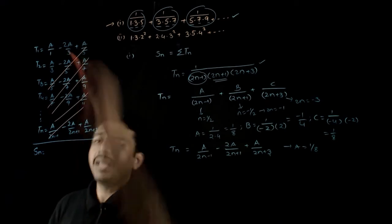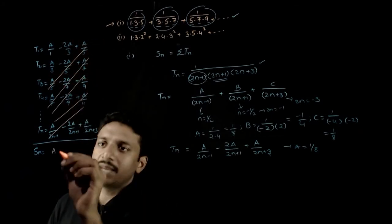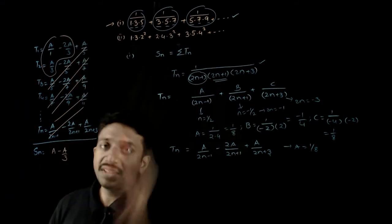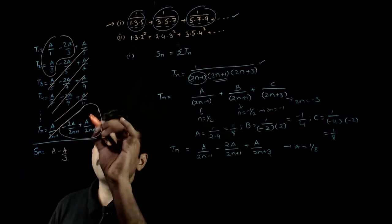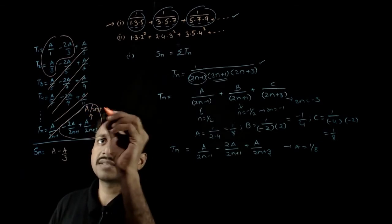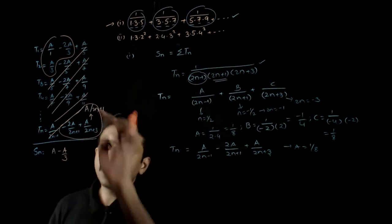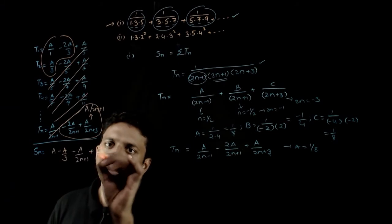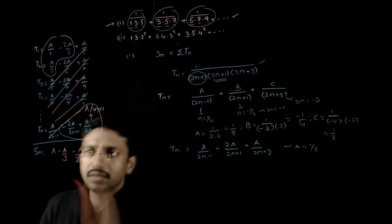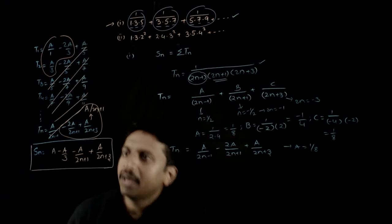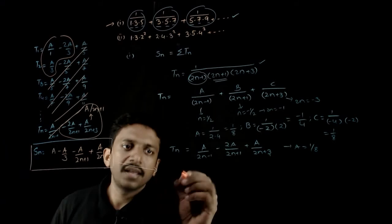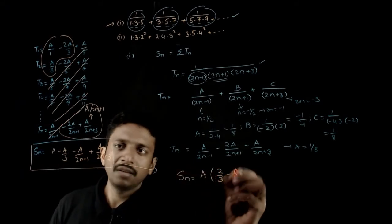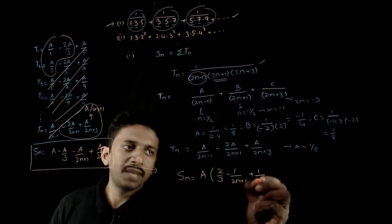After cancellations, the terms left out are: a, then −2a/3 + a/3 = −a/3 from the early terms, and −2a/(2n+1) − a/(2n+1) and +a/(2n+3) from the last terms. So Sn = a − a/3 − a/(2n+1) + a/(2n+3), which simplifies to a times [2/3 − 1/(2n+1) + 1/(2n+3)].